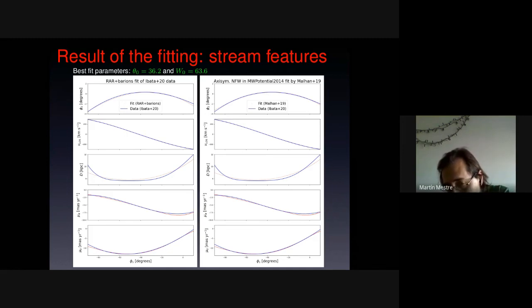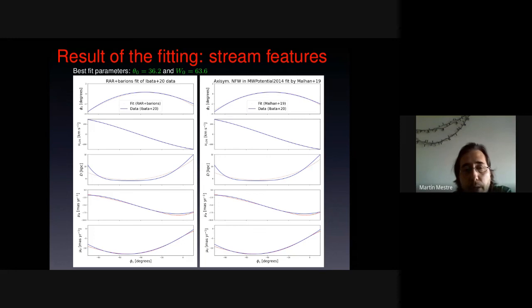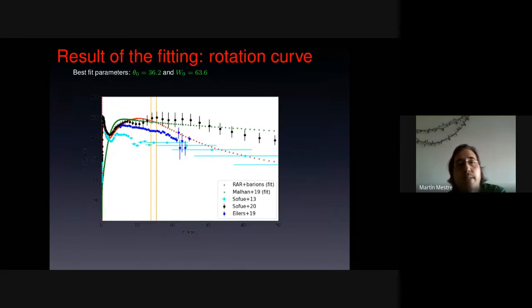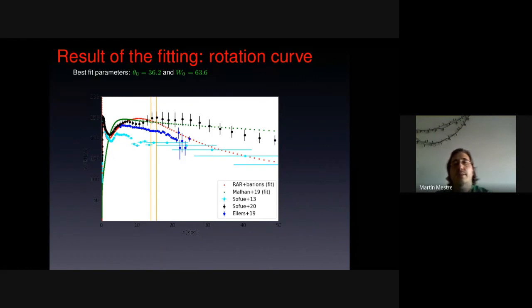And they have got also similar chi-square values. Five more minutes. Okay. Well, then we have the, here we have the result of fitting in the observable space of the stream.